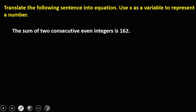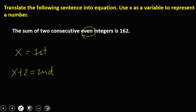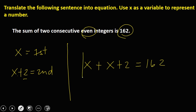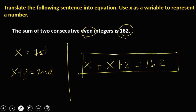'The sum of two consecutive even integers is 162.' Let x be the first integer. Since they are even, the distance between the two consecutive even integers is 2, so the second integer is x + 2. The equation is: x + (x + 2) = 162. Simplified: 2x + 2 = 162.